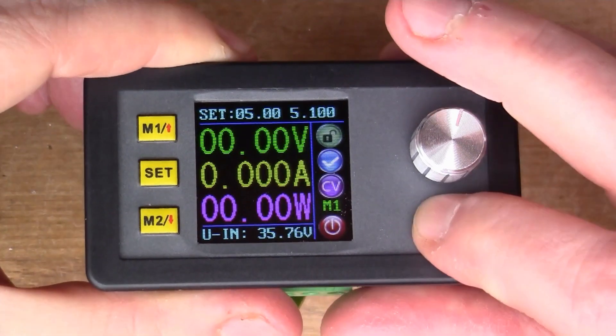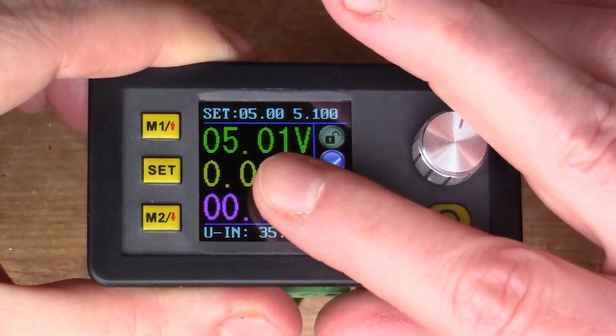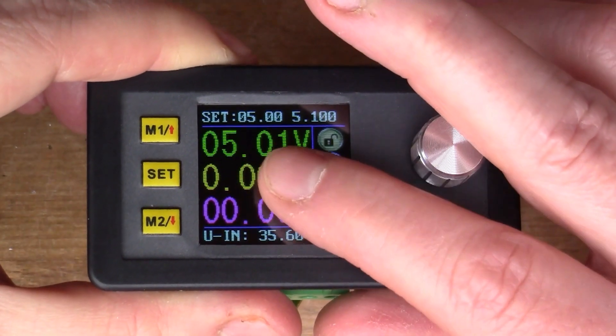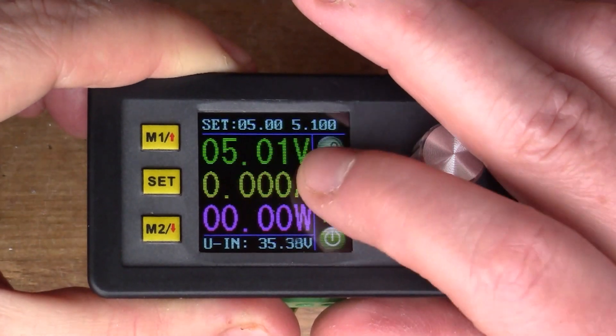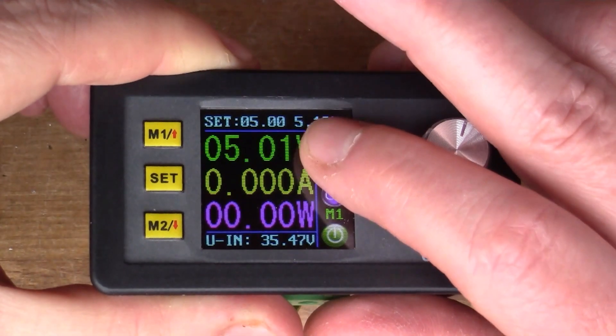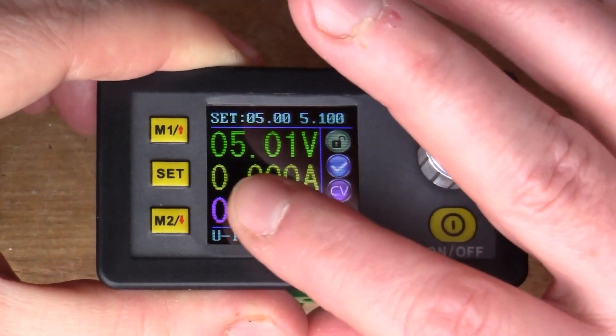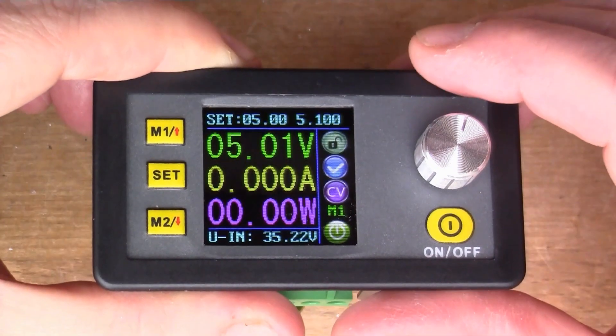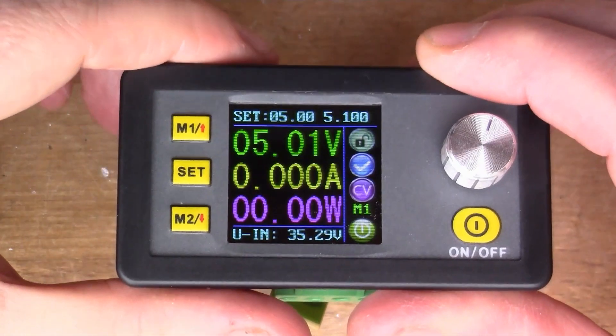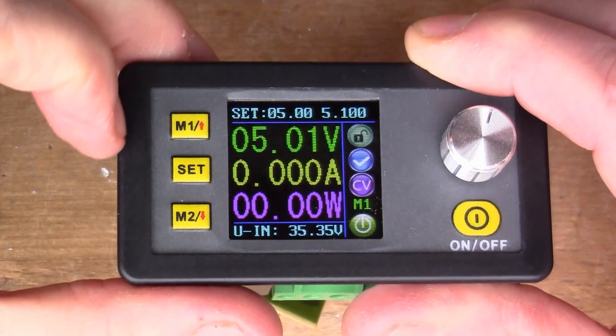And when I switch it on, you can see that the top figure is the voltage that's gone up to 5 volts, which is the set point at the moment. So that's 5 volts there and 5.1 amps is the limit here. Obviously this reads zero at the moment because I've got nothing connected to the output. So there's nothing drawing any current at the moment.